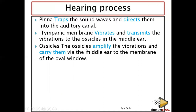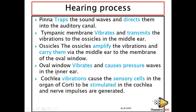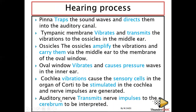The ossicles carry the vibration to the middle ear via the oval window. The oval window vibrates and causes pressure waves in the inner ear — that is the perilymph. The cochlea inside the inner ear vibrates and the sensory cells in the organ of Corti are stimulated, changing the vibration into a nerve impulse. The impulse is then sent to the brain via the auditory nerve.